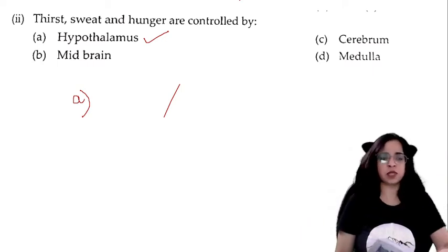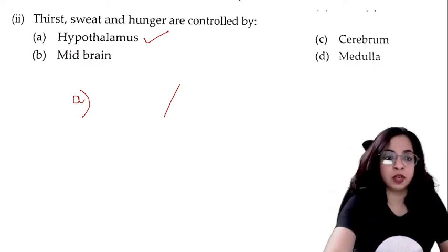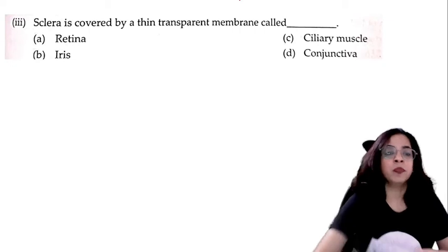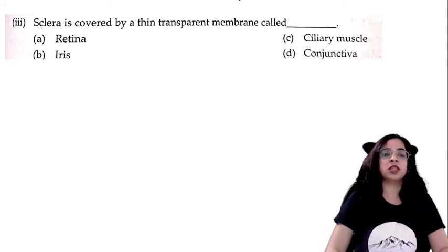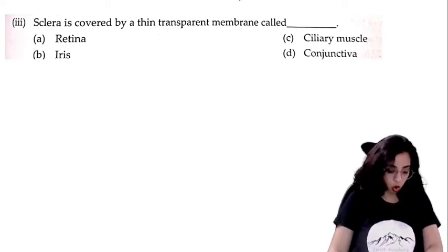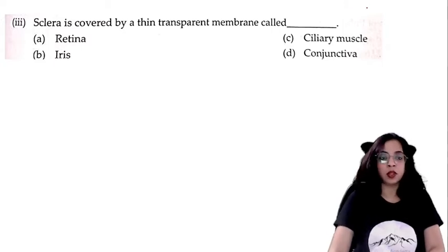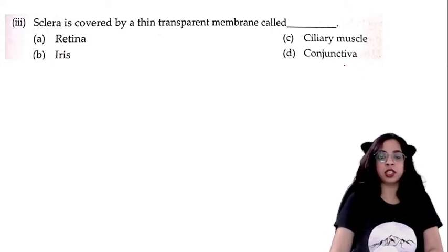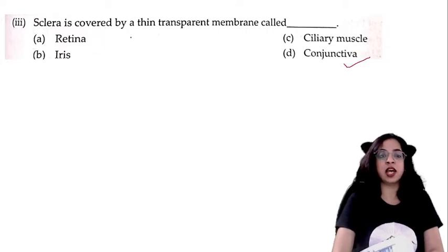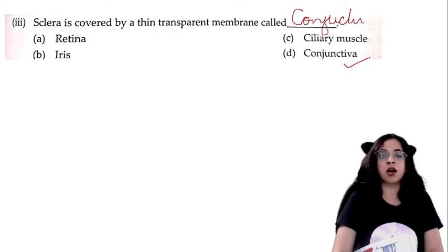Sclera is covered by a thin transparent membrane called: retina, iris, ciliary muscle, or conjunctiva? The answer is conjunctiva. Sclera is covered by a thin transparent membrane called conjunctiva.